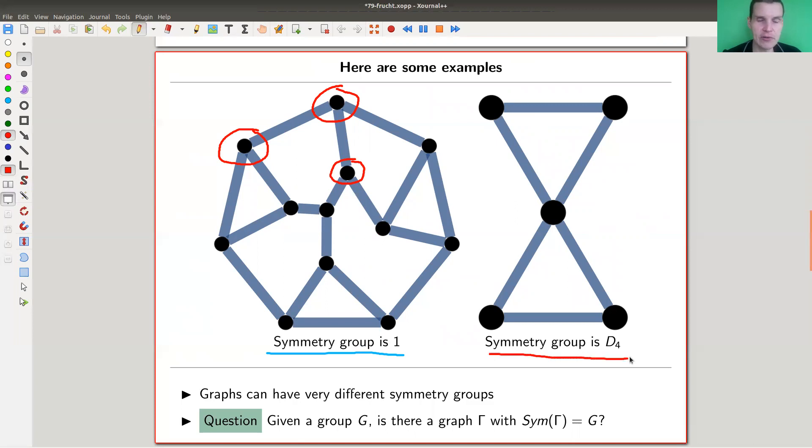The symmetry group of this beast here is D4, dihedral group with order four. Basically what you can do is you can already see it. You can reflect this picture and you can rotate this picture, and the middle vertex always stays fixed. So this symmetry group here is D4. So graphs can have really very different symmetry groups and it's not always easy to tell just by staring at a graph what the symmetry group is. So here, as I said, it's not really obvious. It's not obvious, but it's kind of believable that this guy has no symmetries.